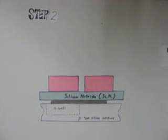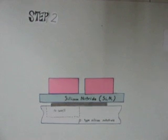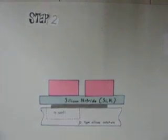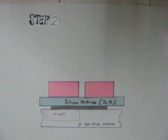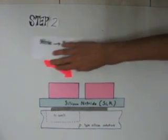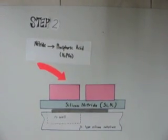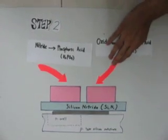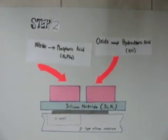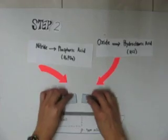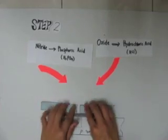Step 2. From the continuation of step 1, we will etch both layers on top of the P-type substrate by using plasma etching. Formerly, this etch was done chemically, such as applying boiling phosphoric acid to the edge of the nitride layer and hydrochloric acid to the edge of the oxide layer. We will only leave behind two etched silicon nitride layers on top of the P-type substrate.